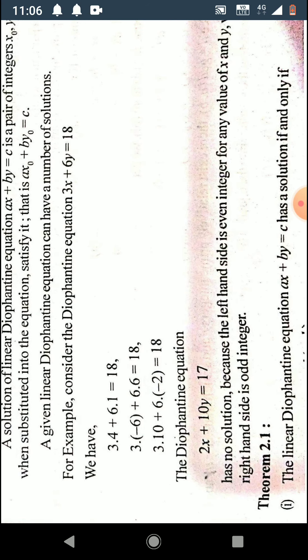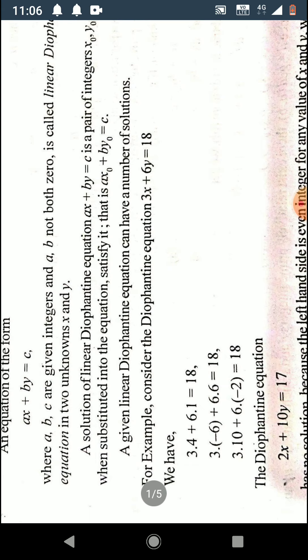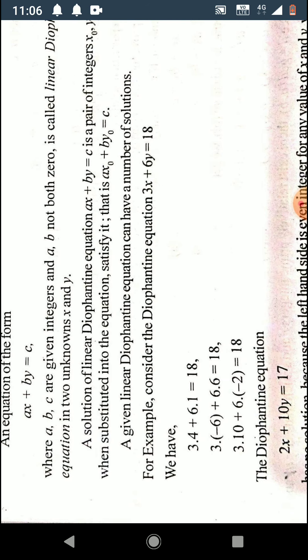Similarly, if we put x equal to minus 6 and y equal to 6, the equation is also satisfied. And x equal to 10, y equal to minus 2 also satisfies it. So the three solution pairs are (4, 1), (−6, 6), and (10, −2), meaning this Diophantine equation has more than one solution.